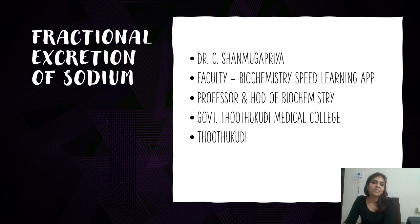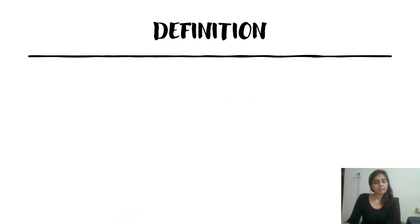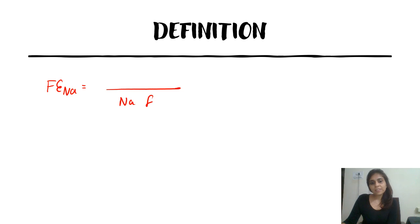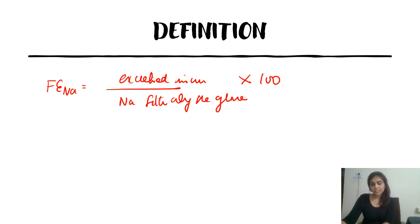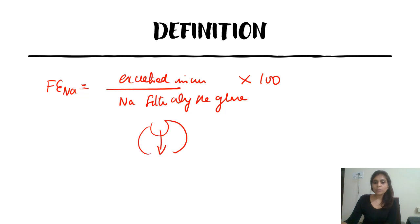I'll begin with a definition. Fractional excretion of sodium is defined as the fraction of sodium that is filtered along the glomeruli which is excreted in urine, and this is expressed as a percentage.